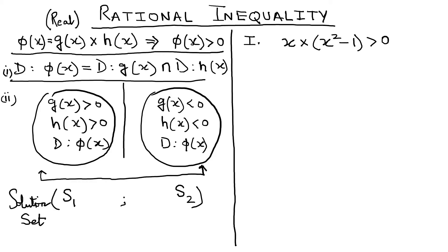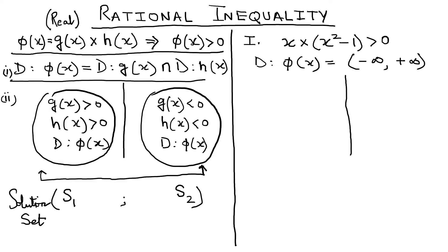To understand this better, let us discuss an example. The domain of x is real numbers, and the domain of x²−1 is also real numbers. So the domain of φ(x) is (−∞, +∞). For Case 1, we say x > 0 and x²−1 > 0, and then take the intersection with x ∈ (−∞, +∞).